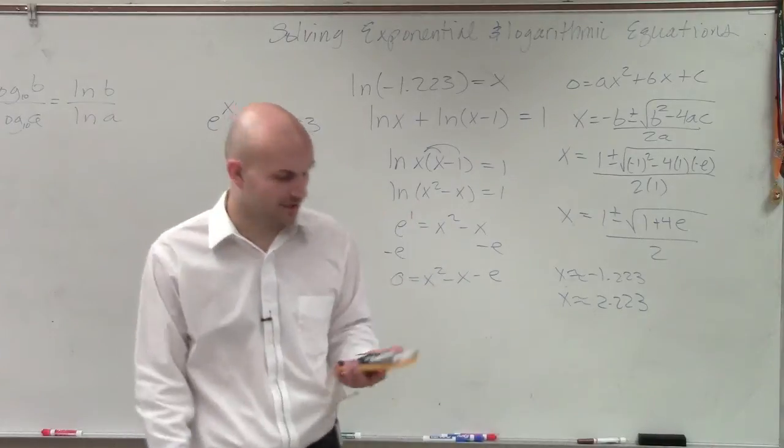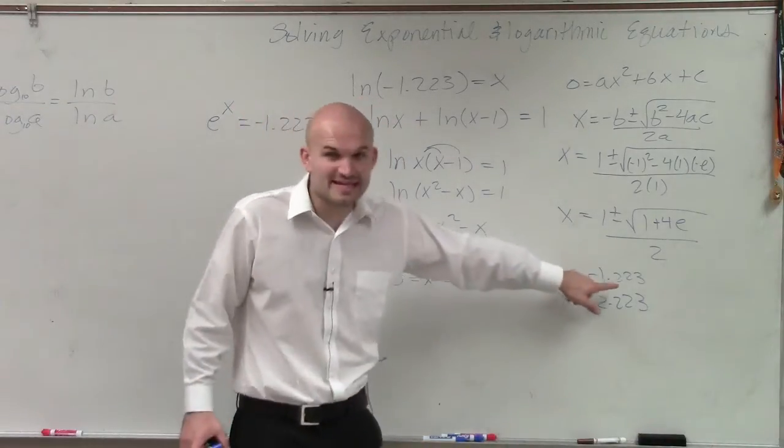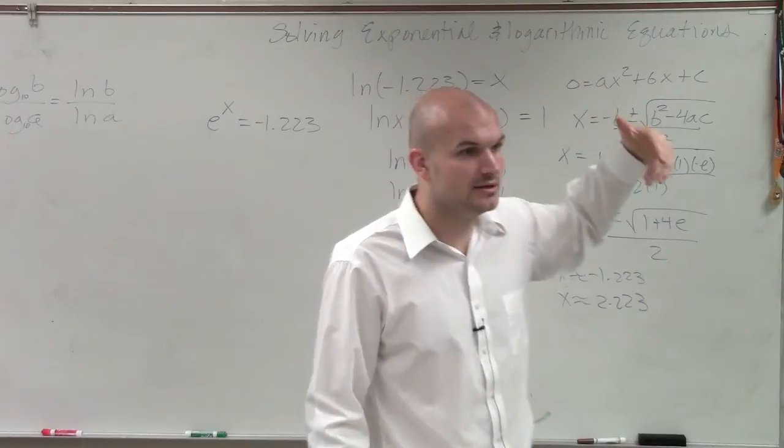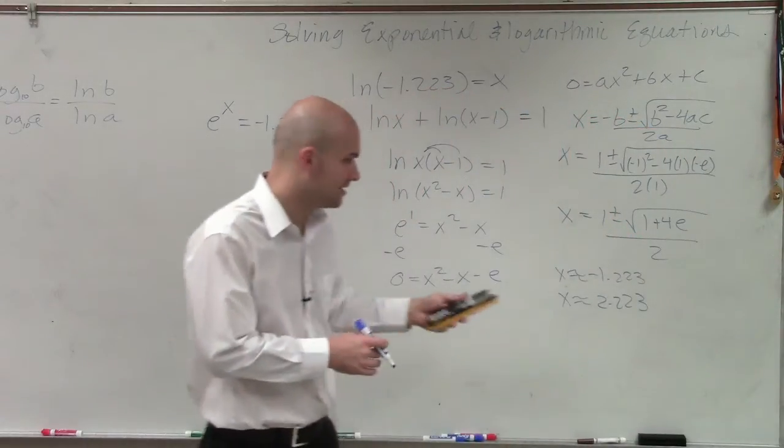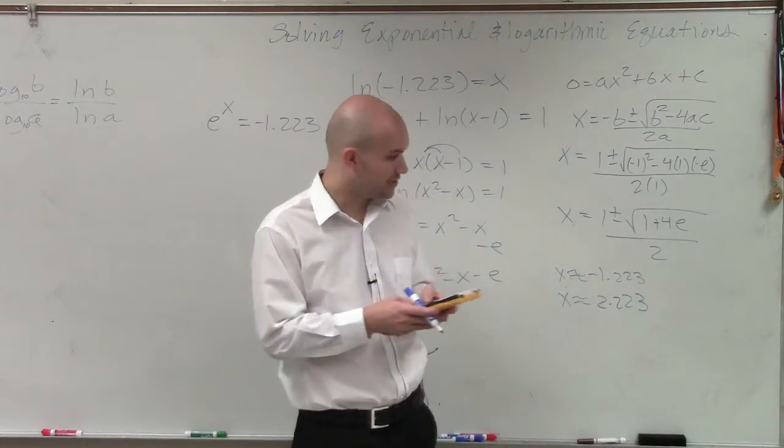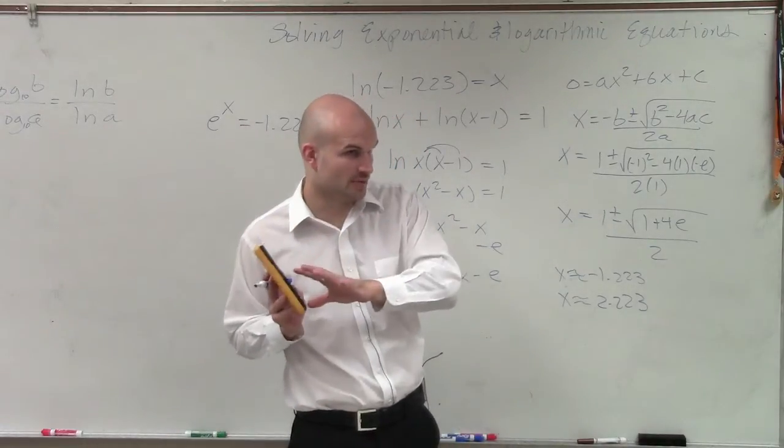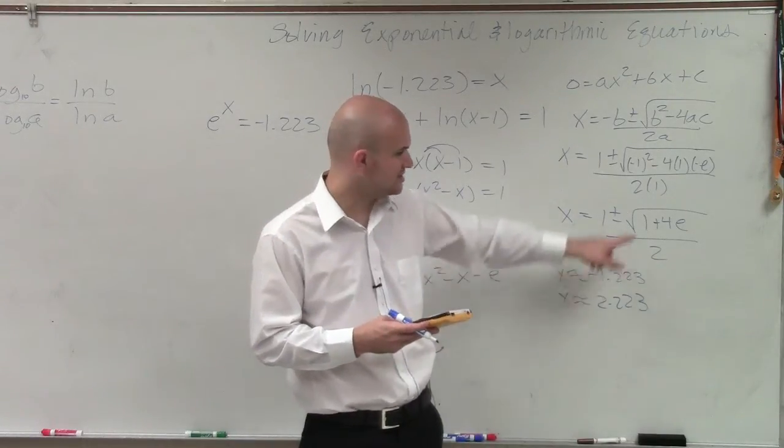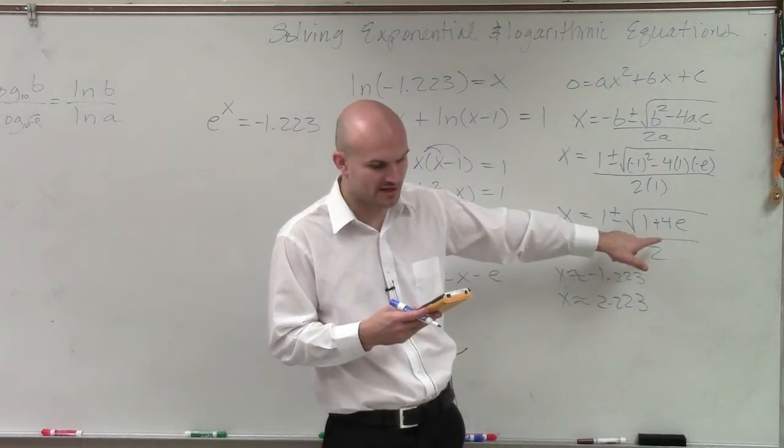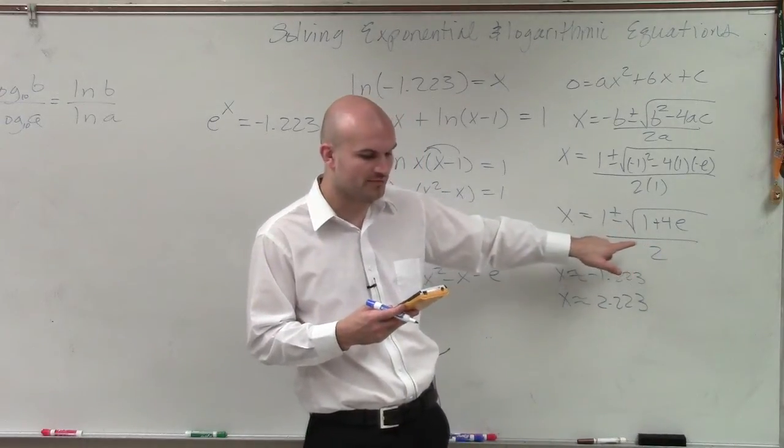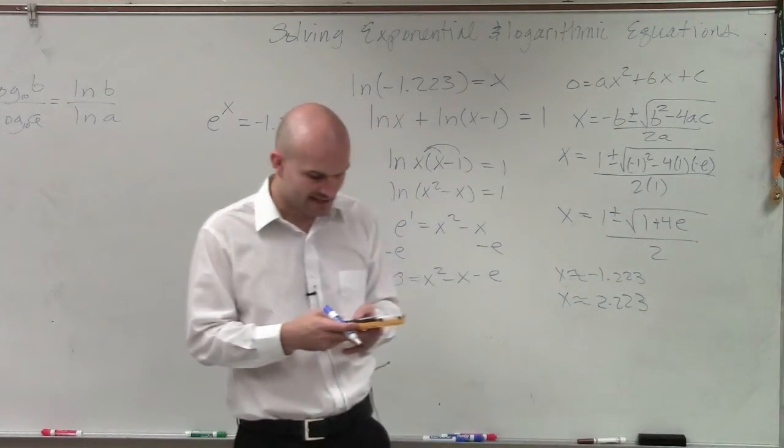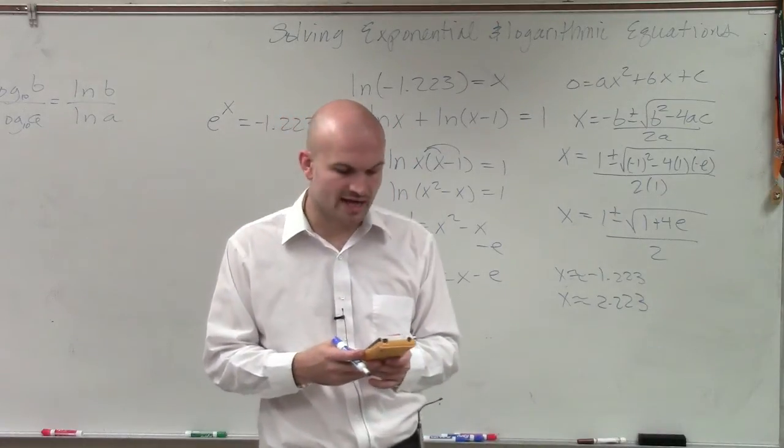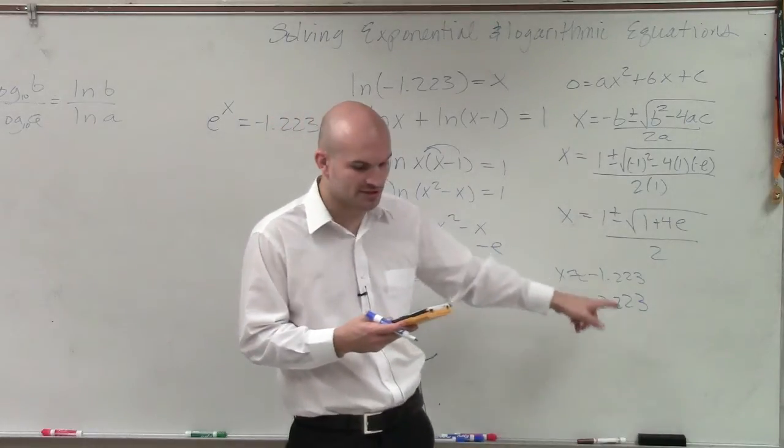2.223. I forgot to take the square root when I did my calculations. But what I want you guys to understand is this answer, this negative 1.233, when you plug it back into your equation. OK, again, I'm approximating. So I do 4 times e, the irrational number that I have in my calculator, plus 1. Take the square root of that value, which was approximately 11.873. I got 3.4457. Then I did 1 minus that answer, and I get negative 2.4457. Divided that by 2, I get negative 1.223.